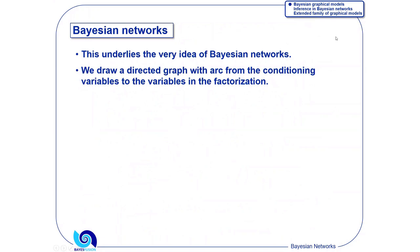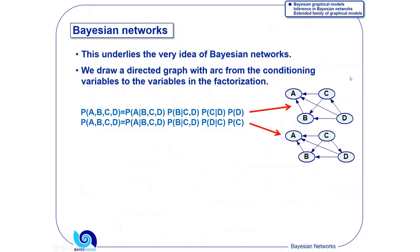What are Bayesian networks, mathematically? Bayesian networks are a graphical representation of factorizations of joint probability distribution. We draw arcs from the conditioning events to the variable before the conditioning bar. For every factorization, you will have a different graph, directed graph, directed acyclic graph.